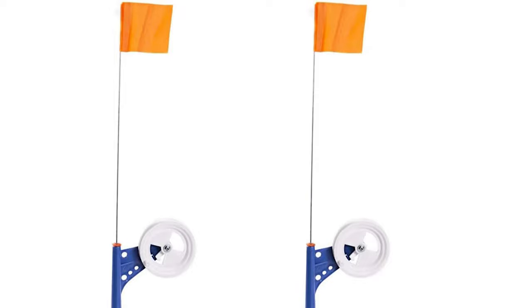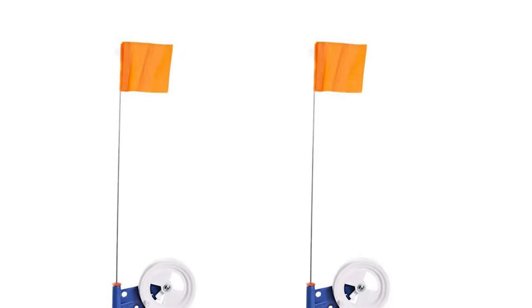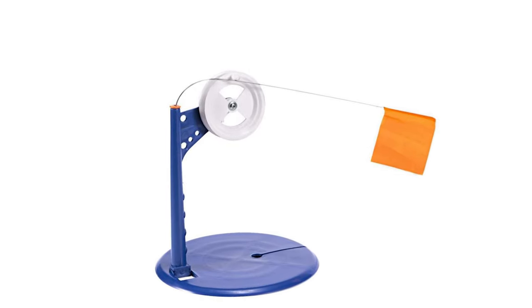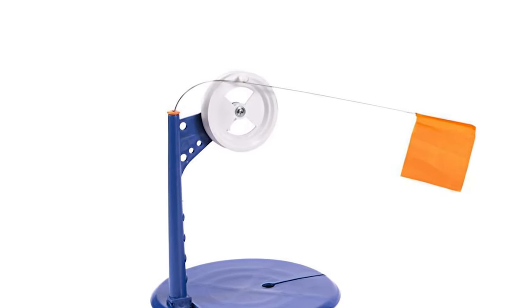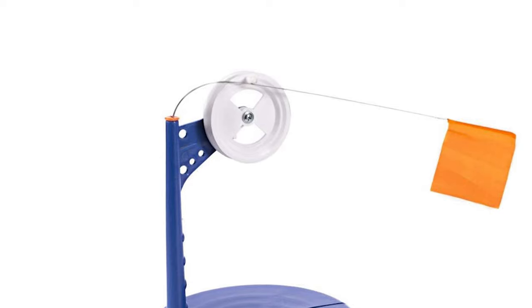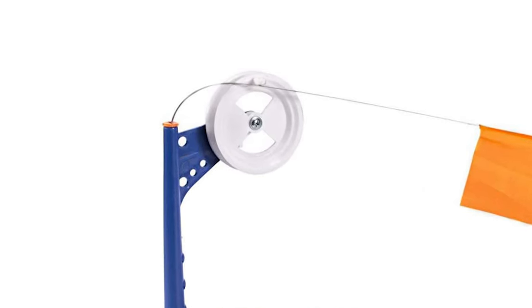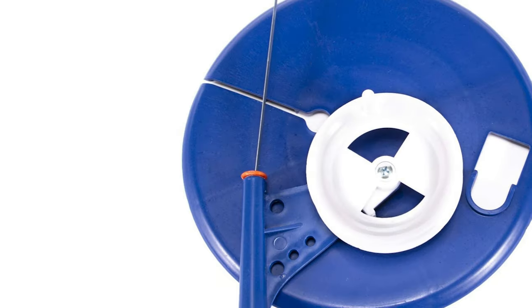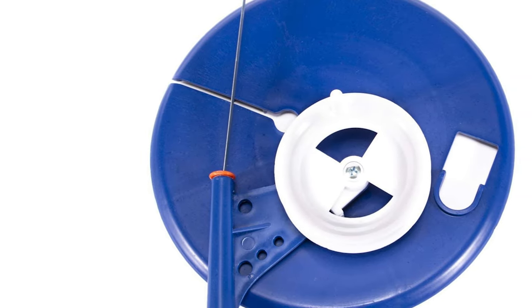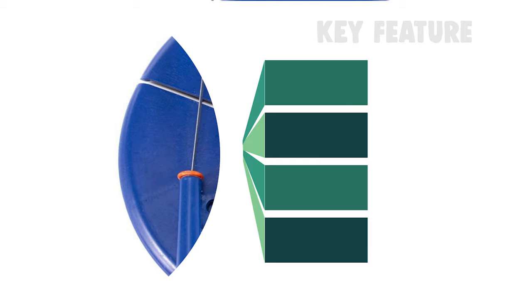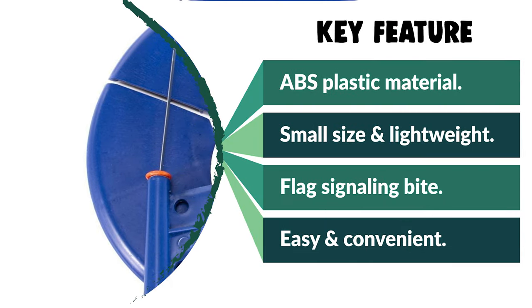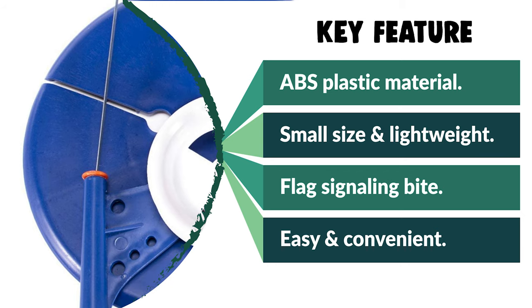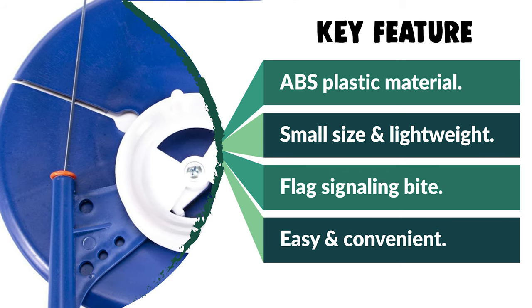The Coherney ice fishing tip-ups is constructed of high quality ABS plastic material with the characteristics of strong and durable and has a long life. It is small and lightweight to carry when you are in a fishing activity which can play a marker when ice fishing. It is also equipped with reel and flag signaling bite. Moreover, this ice fishing tip-up is easy and convenient for winter fishing tackle, popular and in demand. It allows you to lift the rod out of the holder and fight your fish.